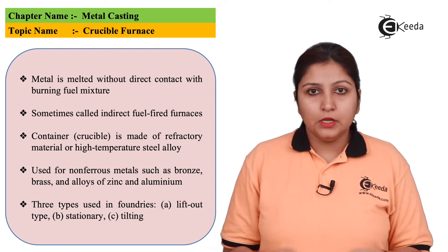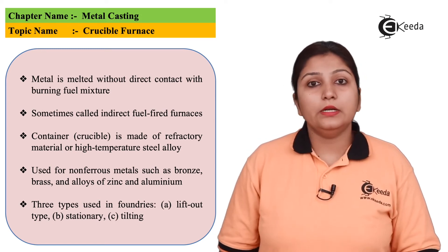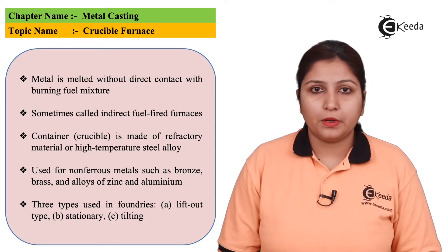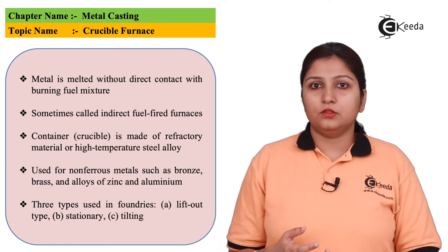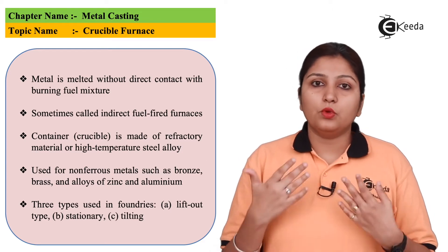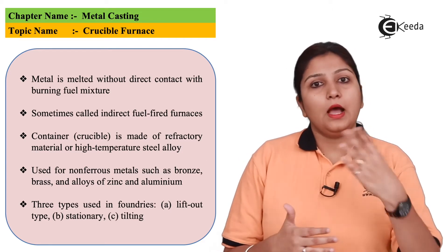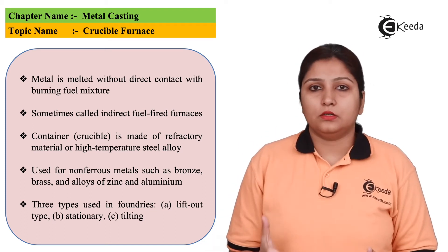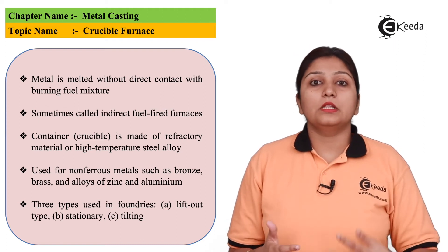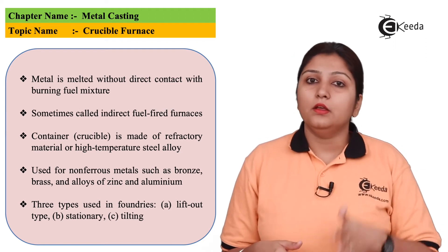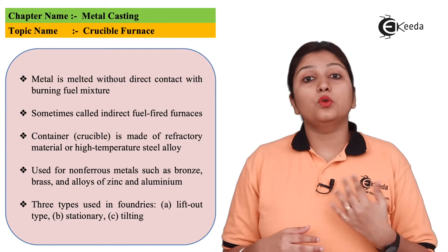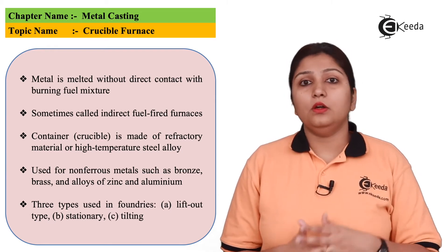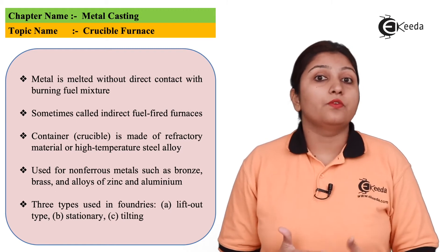Inside the crucible, there are some linings called refractory linings. These are used to sustain the high temperature of your molten metal. After heating, the metal becomes molten, and the high temperature can degrade the inner walls of your crucible. That's why refractory linings are provided, so that your molten metal cannot degrade the inner linings of your crucible.